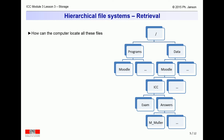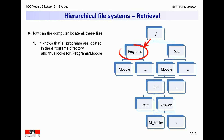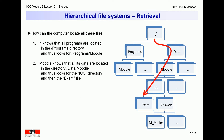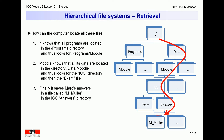All these files can thus be identified in the hierarchical file system by their so-called tree names. The computer file system looks for a program named Programs/Moodle. Moodle then tells the computer to look for a file named Data/Moodle/ICC/Exam. And finally, it tells the computer to store Mark's answers in a file called /data/Moodle/ICC/Answers/M_Mueller.